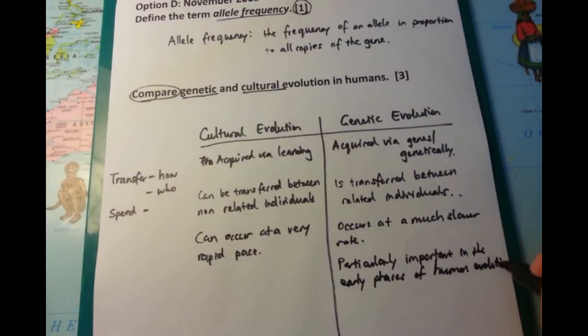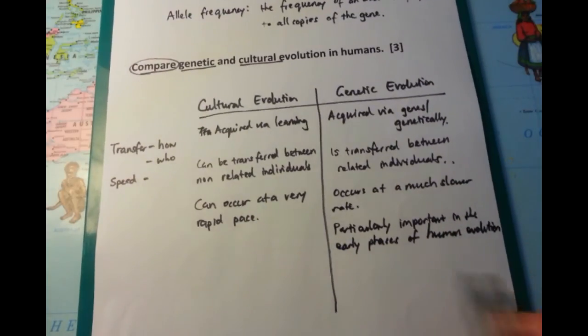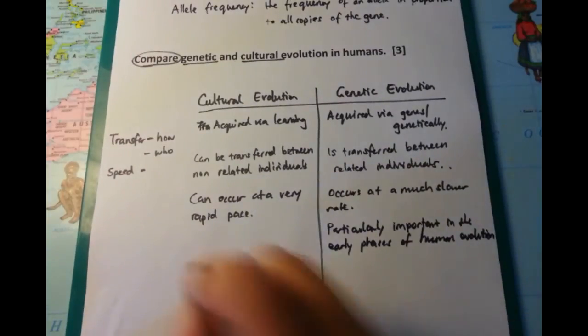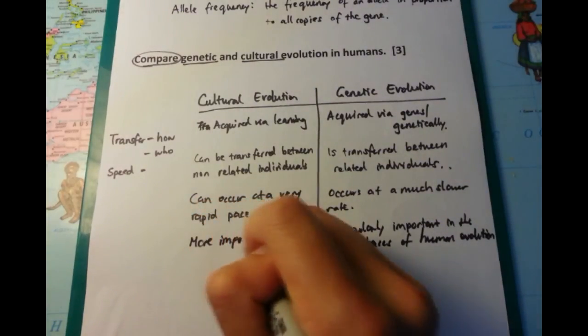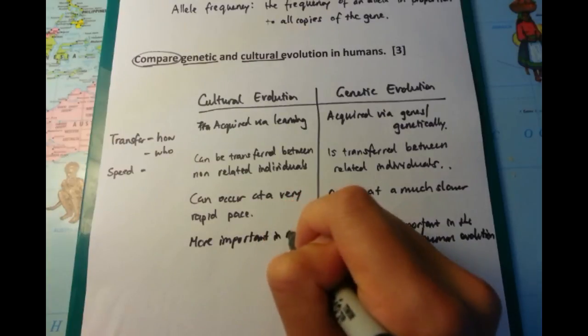Now, I'm getting ahead of myself again, but let's talk about the final point I haven't mentioned, which is that genetic evolution was important in the early phases of human evolution. This is during the evolution from primate to humans, as opposed to cultural evolution.